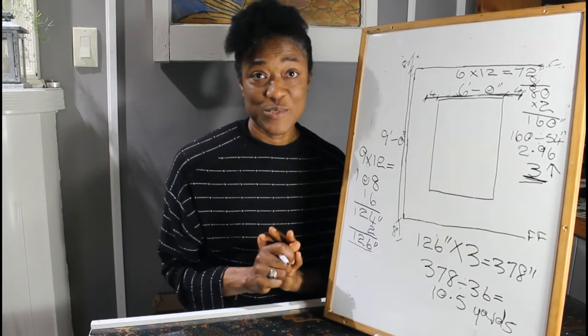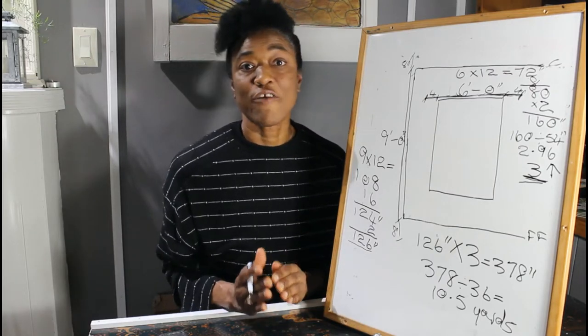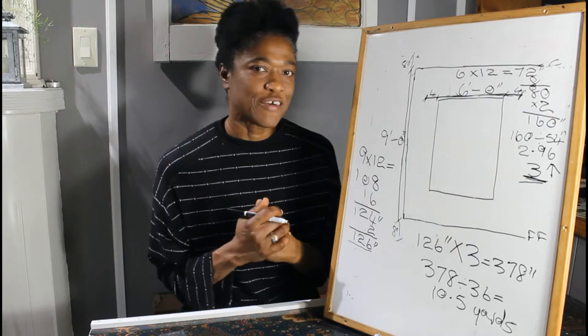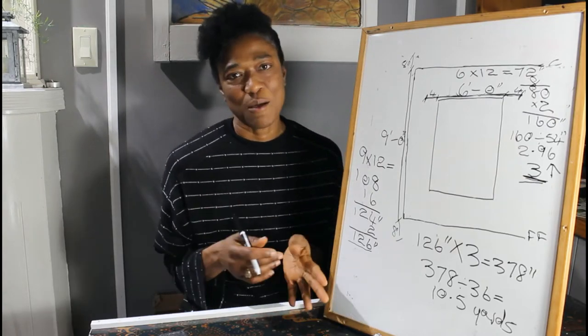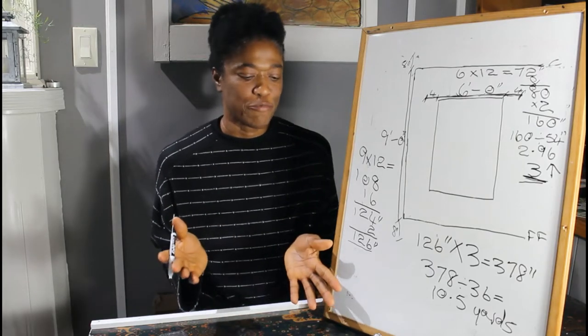Now we can go to the store and buy 10.5 yards of fabric, or we can round up and buy 11 yards of fabric in order to get some decorative cushions, so we can coordinate with our drapery panels.